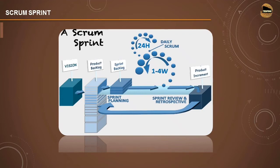The daily Scrum call is just like a stand-up meeting where all team members gather and the Scrum Master addresses the development team with questions. Generally there are three questions the Scrum Master asks every day: What did you do yesterday? What are you planning to do today? And are there any challenges or roadblocks you are facing? This happens every day for about 15 minutes, which is why they are called stand-up meetings.